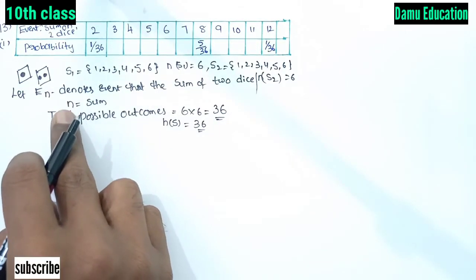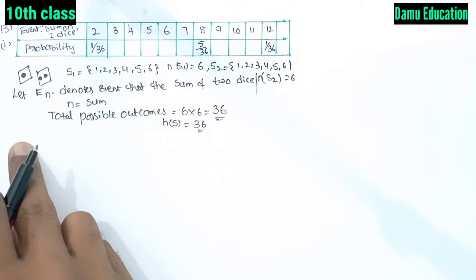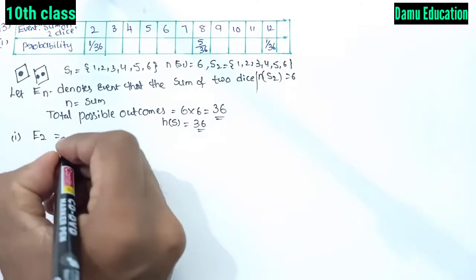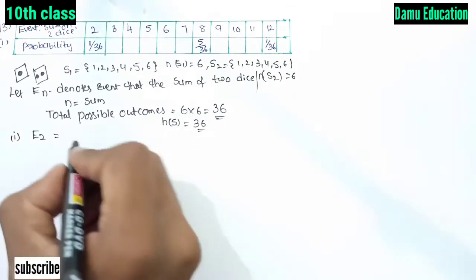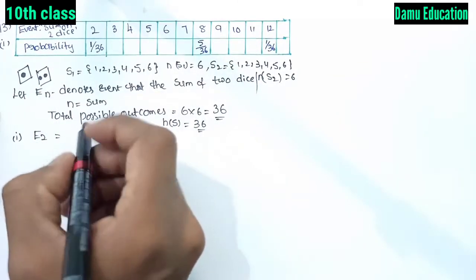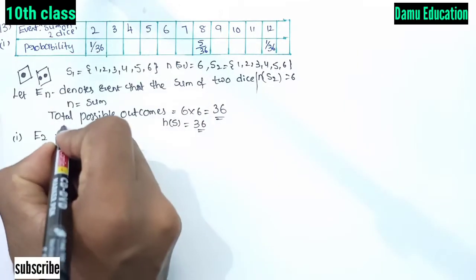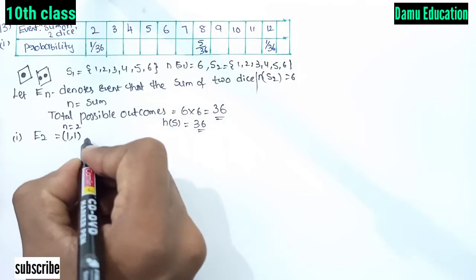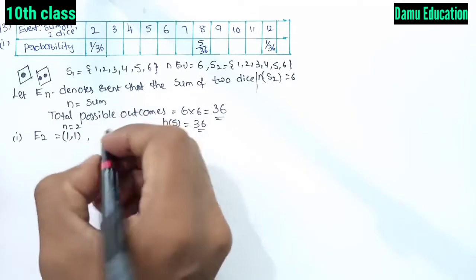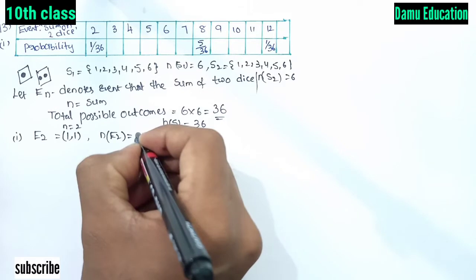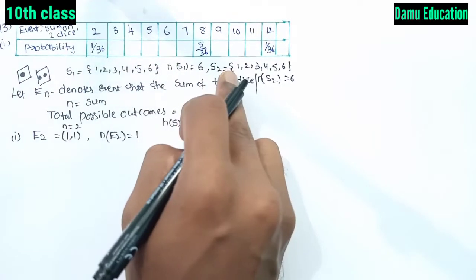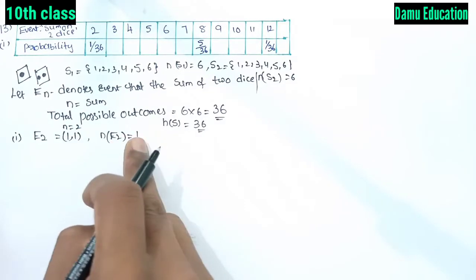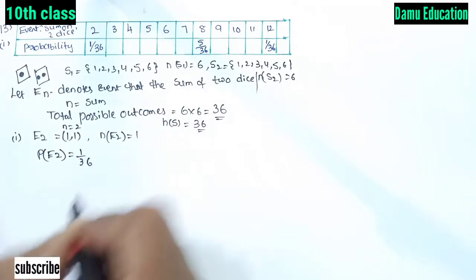For E2, the sum equals 2. The only possibility is (1,1) — first die shows 1 and second die shows 1. So the number of favorable outcomes n(E2) = 1, and the probability P(E2) = 1/36.